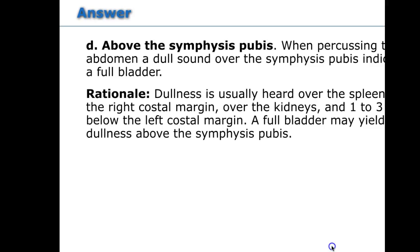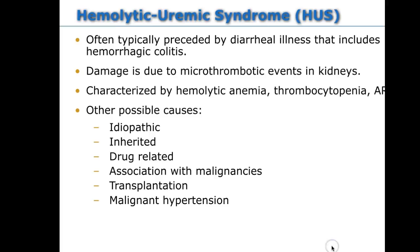Hemolytic uremic syndrome is a serious situation usually caused by E. coli, typically starting with a diarrhea-type illness followed by bloody diarrhea. It is characterized by three things: hemolytic anemia, thrombocytopenia, and acute renal failure. Other causes include inherited forms, transplantation, or it can be idiopathic. A notable historical example was the Jack-in-the-Box E. coli O157 outbreak in Seattle, which caused a number of people to develop hemolytic uremic syndrome.